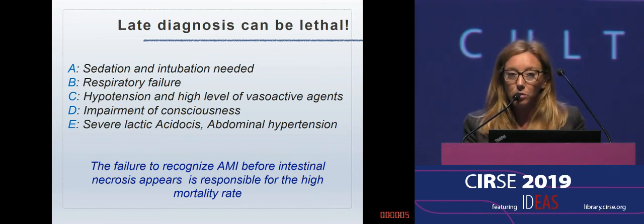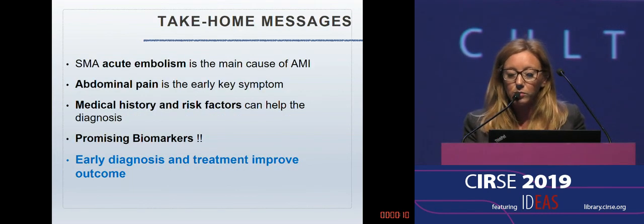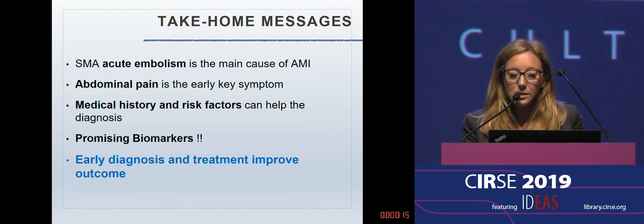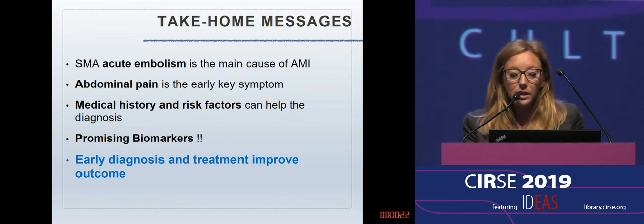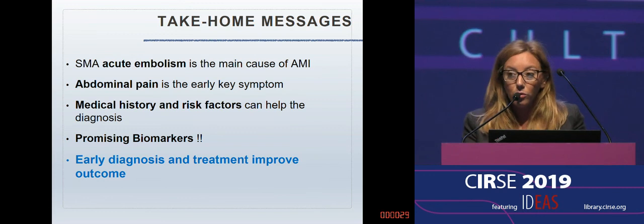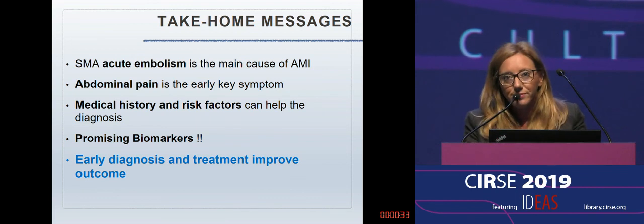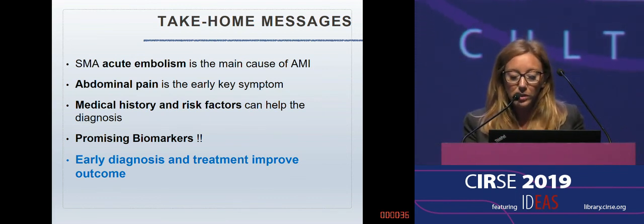We must not underestimate the role of early diagnosis and early treatment, which can really change the outcome. To summarize: the acute embolism of the superior mesenteric artery is the main cause of AMI. Abdominal pain is often the early key symptom but is not always present. Medical history and risk factors are crucial to help clinicians in the diagnosis. Promising biomarkers are on the way, but more studies are required, and early diagnosis and early treatment can really improve the outcome.